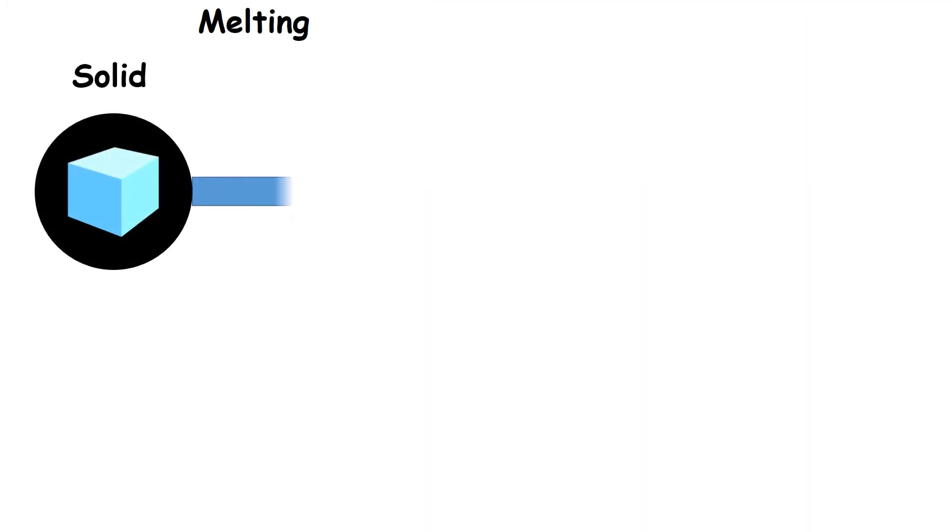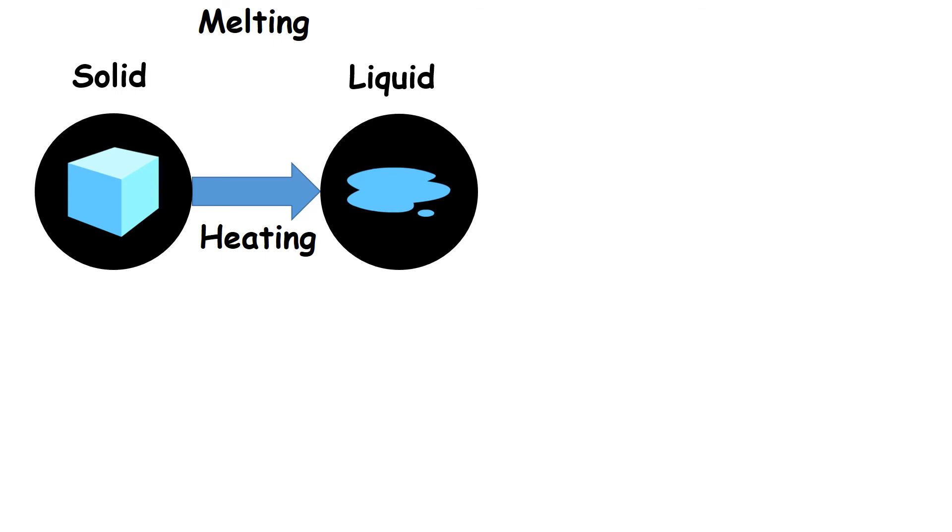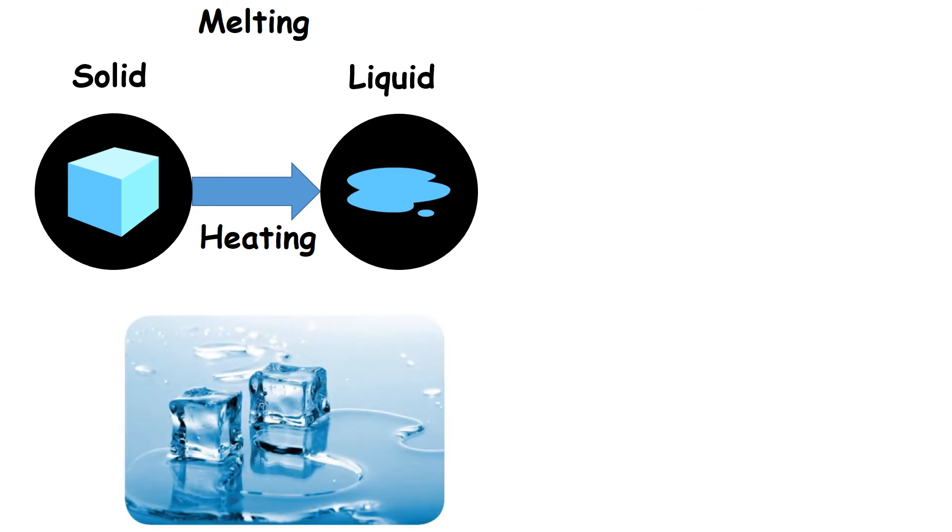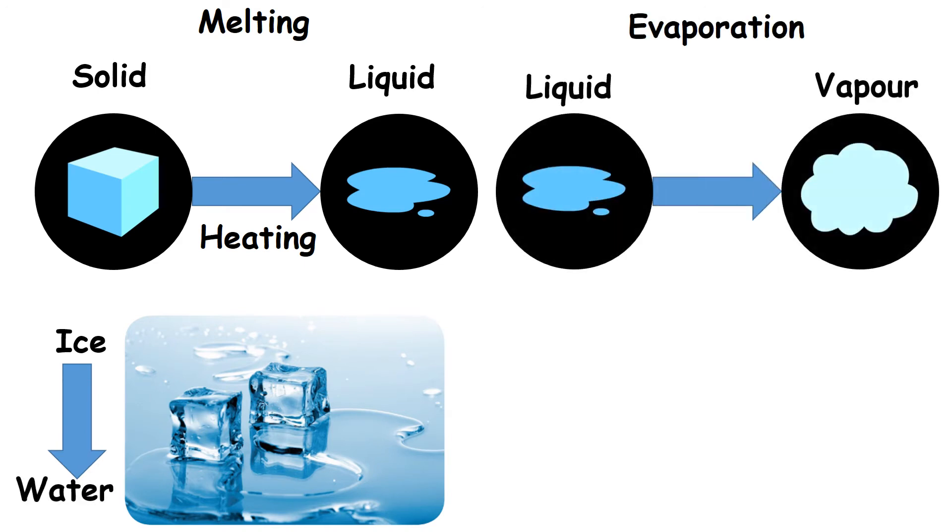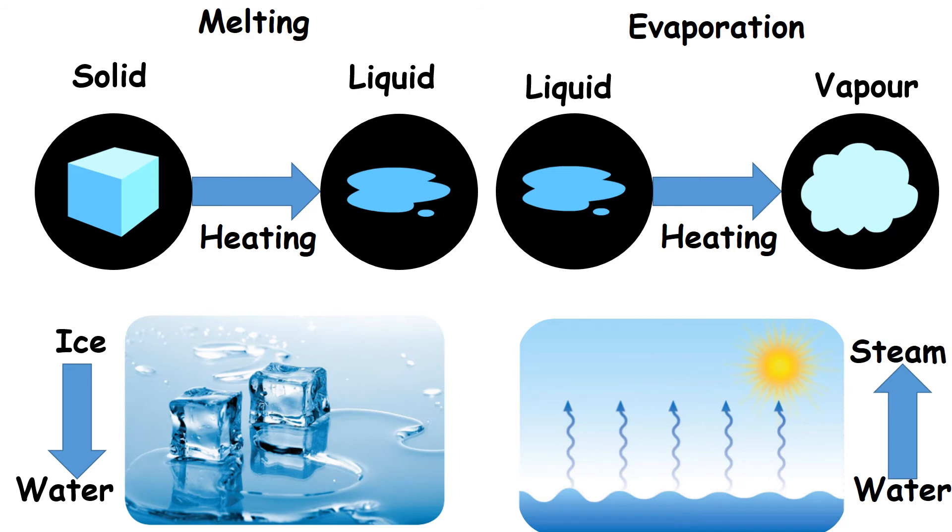Melting. Change of solid into liquid on heating is called melting. For example, if ice is heated, it will change into water. Evaporation. Change of liquid into vapor on heating is called evaporation. For example, if water is heated, it will change into steam.